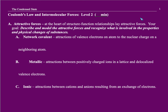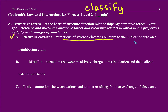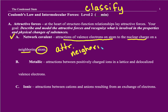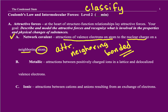One of the first steps in comparing substances is you want to classify. The main ones we're going to be looking at are network covalent. Network covalent is an attraction of valence electrons on one atom to the nuclear charge on a neighboring atom. So these are attractions between neighboring bonded atoms. What we have is an ongoing array of covalent bonds.